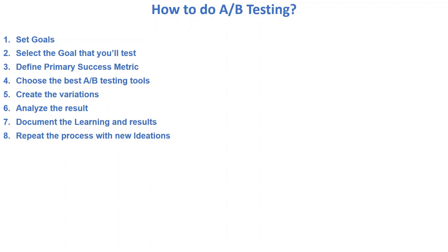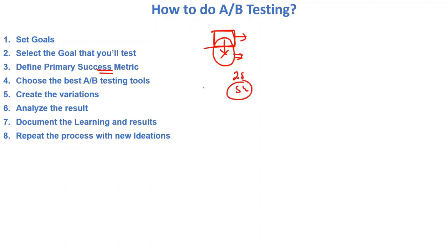How do we perform A/B testing? First, we need to set our goals — for example, we want to improve the web page and ensure customers stay longer on that page. Second, select the goal you will test — that customers should stay more time on that particular web page. Third, define the primary success metric — for example, the customer should stay at least two to five seconds on that page. We set a threshold before testing begins.